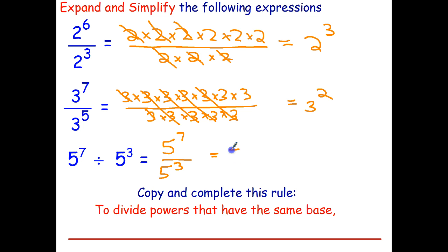And the shortcut for that of course is going to be just five to the seven minus three, and that leaves four fives multiplied together. So in words, to divide powers that have the same base, we subtract the indices.